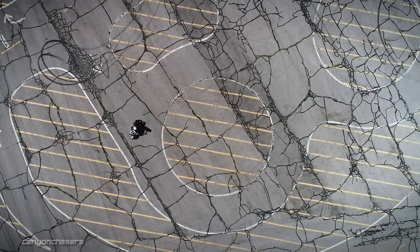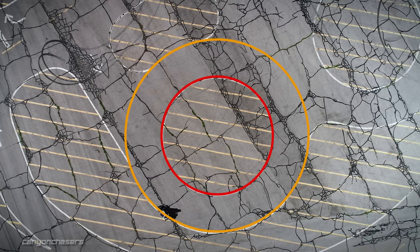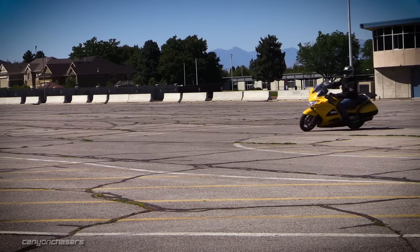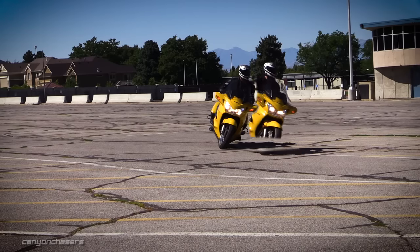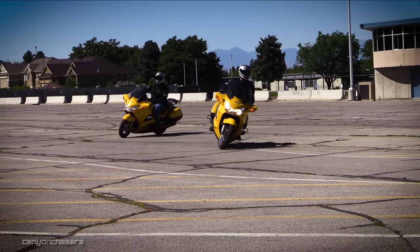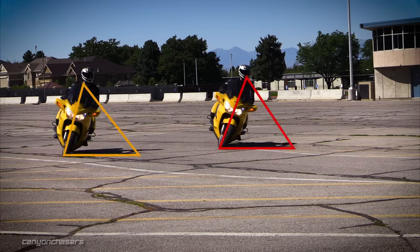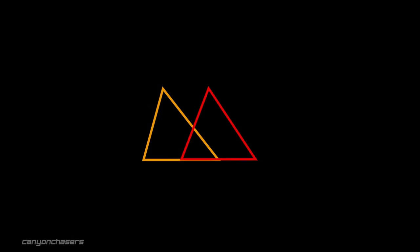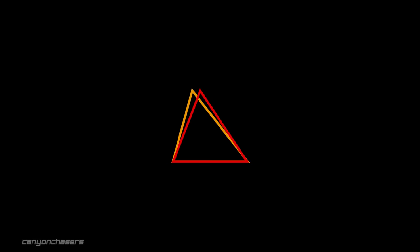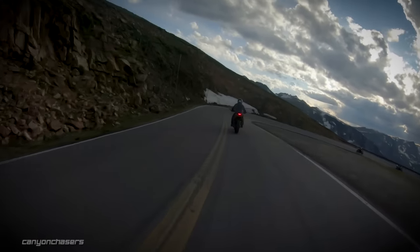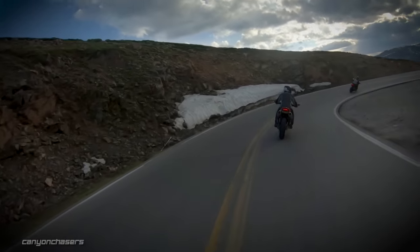Which circle could you ride around fastest? The big one? The small one? Which one would require less or more lean? Obviously, to go fast around the small circle would require more lean angle than the same speed around the big circle. This is a fundamental law of motorcycling — speed and radius are inexorably linked. Now throw traction into the mix. The more we lean, the more traction we are using, and that is the eternal balancing act that is cornering.